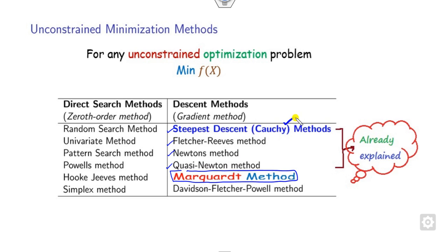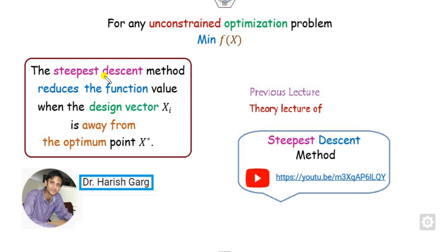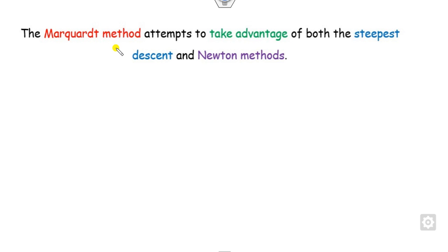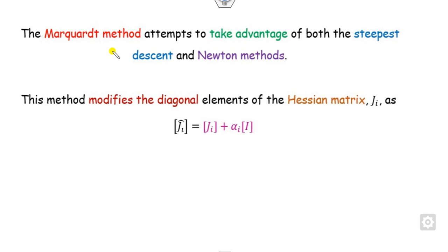This method utilizes the features of the steepest descent as well as the Newton's method. The steepest descent method is very helpful to reduce the function value when your design vector is away from the optimal solution. On the other hand, the Newton method converges very fast when the decision vector is closer to the optimal solution. By taking the advantages of both, the Marquardt method attempts to find the optimal solution.